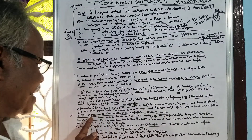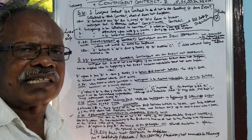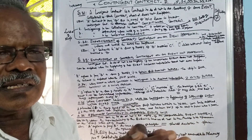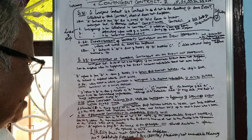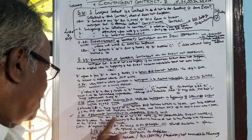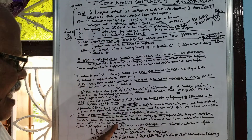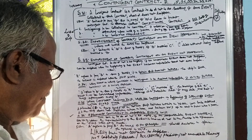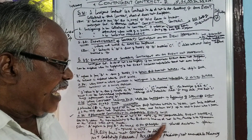Section 36: Agreement contingent on an impossible event is void. The contingent contract to do or not to do anything, if an impossible event happens, is void — whether the impossibility of the event is known or not to the parties at the time the contract is made. Illustration: A agrees to pay B rupees 1,000 if two straight lines should enclose a space. Since parallel lines can never enclose a space, this is a void agreement.